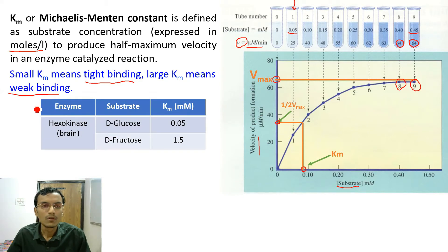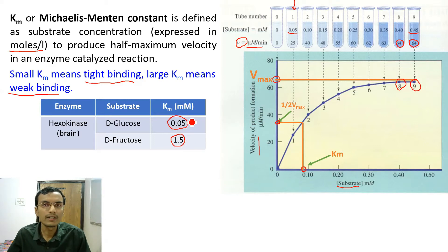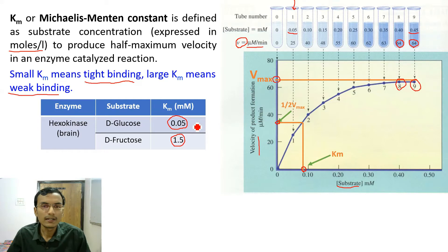Here are the Km values of hexokinase for two different substrates. For hexokinase working in the brain, the Km for D-glucose is 0.05 millimolar and for D-fructose it is 1.5 millimolar. The small Km value means strong affinity, so hexokinase shows strong affinity for glucose but weak affinity for D-fructose. To produce half-maximum velocity, only 0.05 mM glucose is required, whereas 1.5 mM D-fructose is needed.